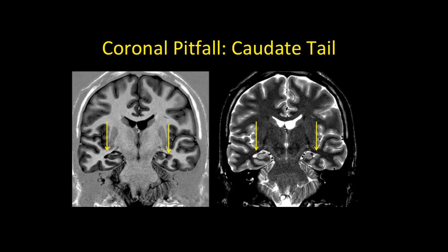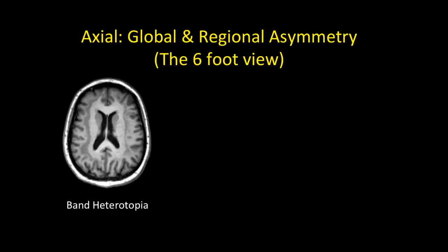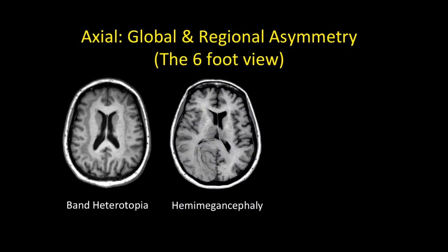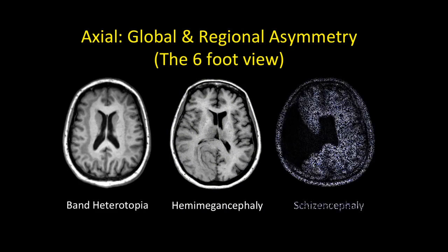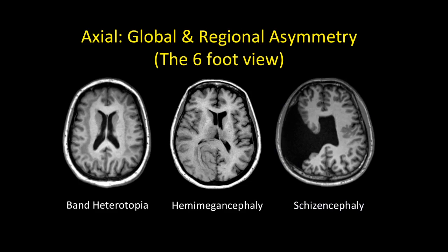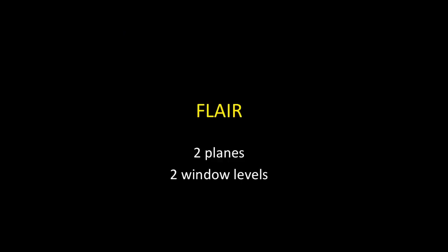On the axial MP-rage, take a step back and look at global and regional asymmetry — a six-foot view. Here's a case of band heterotopia, a case of right occipital hemimegalencephaly with accelerated myelination, and a case of schizencephaly. Look for right versus left comparison, anterior versus posterior comparison, and also look for second or even third lesions — as in this patient with schizencephaly who also has a missing septum, consistent with septo-optic dysplasia.